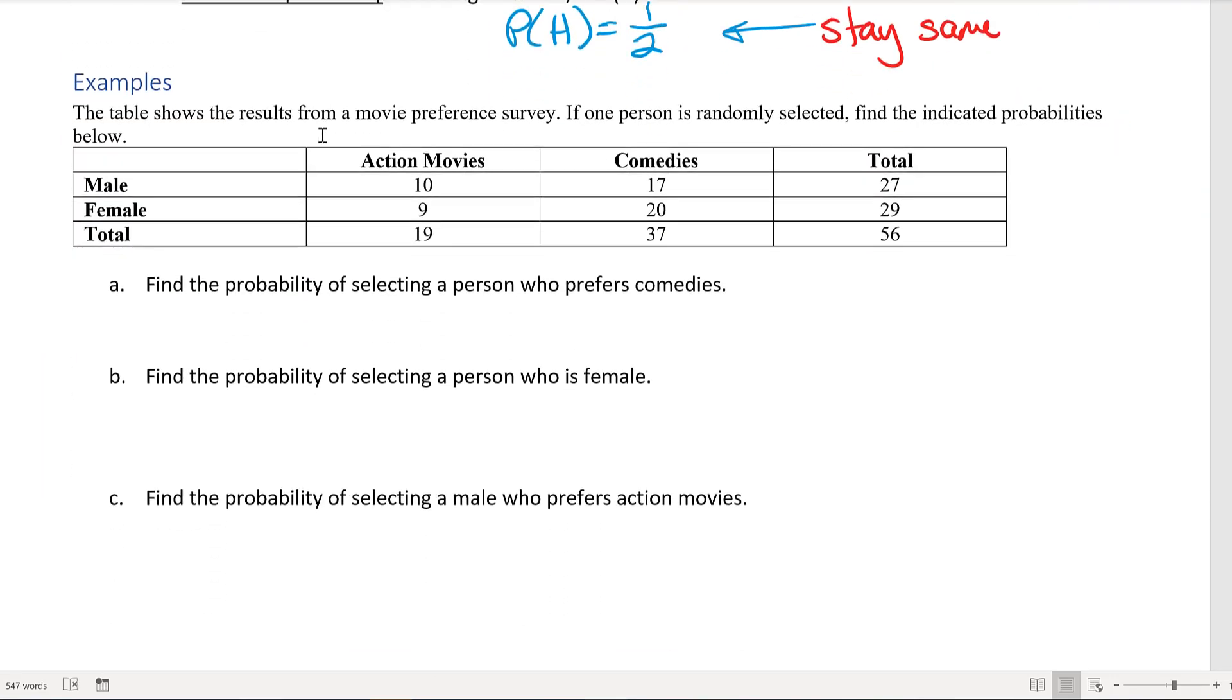For our next example, the table shows the results from a movie preference survey. If one person is randomly selected, find the indicated probabilities. So if we repeated the survey with another set of people, you're going to have different results. But for this specific survey, we're trying to find the probability.